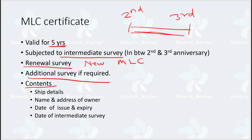Let us see the contents of the MLC certificate. You will find ship details — the IMO number, name of the ship, where it is registered, and the gross tonnage. Then the name and address of the owner, and the date of issue and date of expiry of the certificate. On the next page, there will be a space where the intermediate survey date is mentioned, endorsed by the surveyor who performed the intermediate survey.